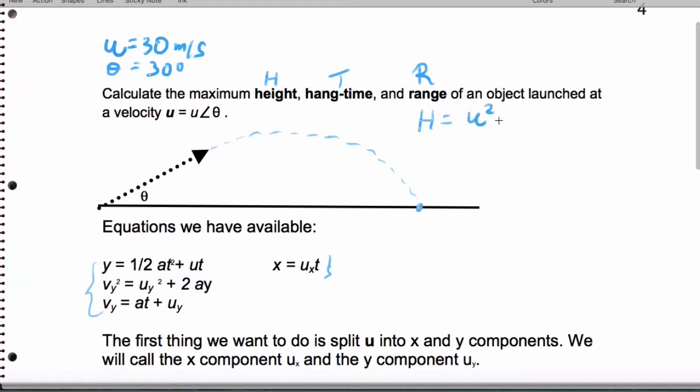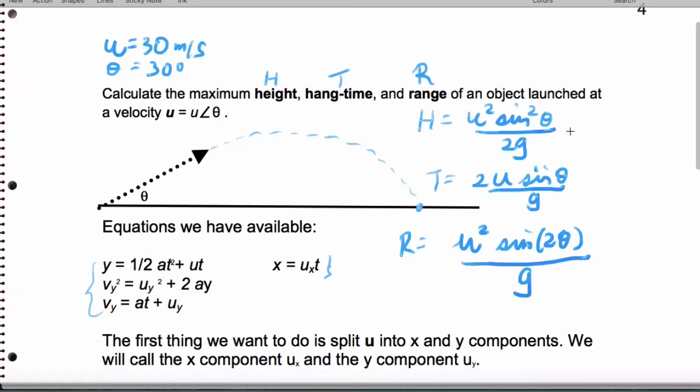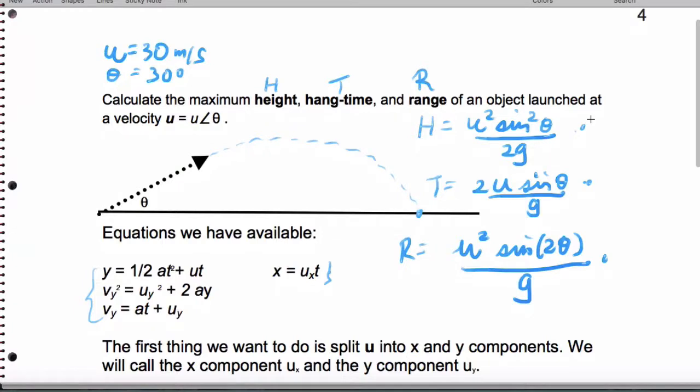The height is given by u squared sine squared theta over 2g. The hang time is given by 2u sine theta, where u is the launch speed. And the horizontal range is given by the initial speed squared times the sine of 2 times the angle divided by g. These are the three formulas that you need to know for the IB exam and for the exam on September 14th. Now I'm going to come up with the formulas using modified data booklet equations to help us.